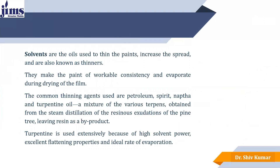Now the solvent. Solvents are oils used for thinning of paint or to increase the spreading power over the surface. These are called thinners. They make the paint workable — increasing the workability and consistency of the paint — and evaporate during drying to form a thin film of paint over the surface. Common thinning agents used are petroleum spirit, naphtha, and turpentine oil. Turpentine oil is used most extensively because of its high solvent power, excellent flattering properties, and ideal rate of evaporation.